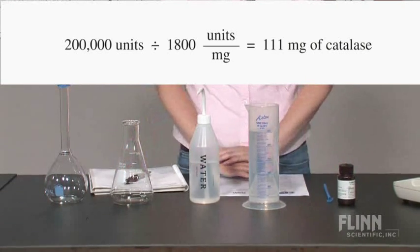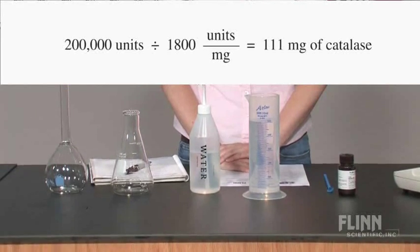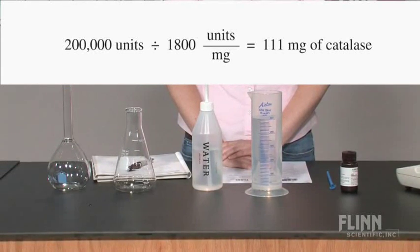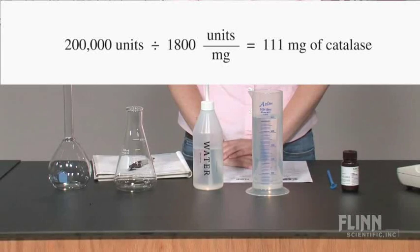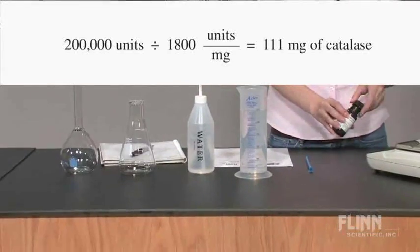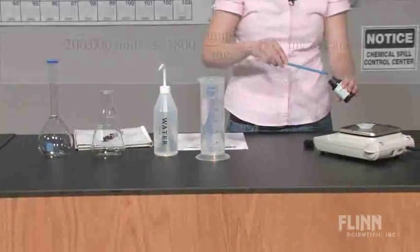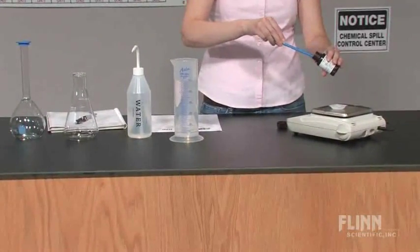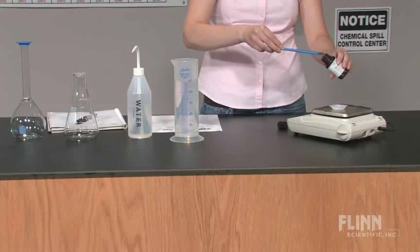This total will be the number of milligrams of catalase required to prepare the solution. Let's say that the bottle reads 1,800 units per milligram. Divide 200,000 total units by 1,800 to obtain the milligrams of catalase required. Mass 111 milligrams of catalase.